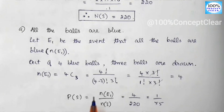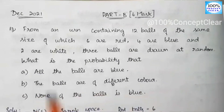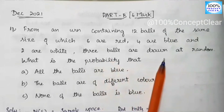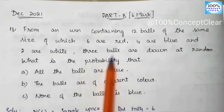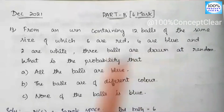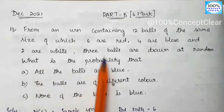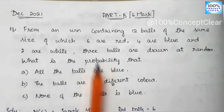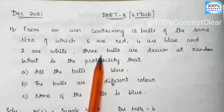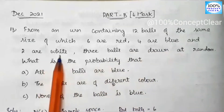Next, Part B: the balls are of different colours. We drop 3 balls and they must be of different colours — red, blue, and white. Let E2 be the event that the balls are of different colour.